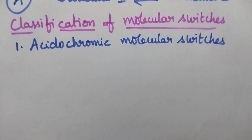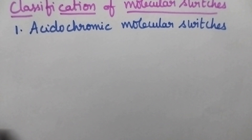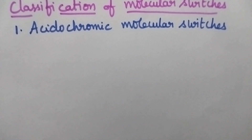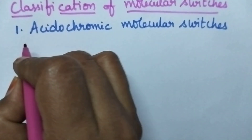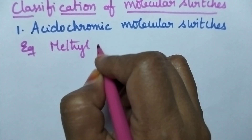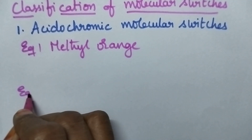Coming to the acidochromic molecular switches — that means the molecules which can change their structure in the presence of pH. In acidic conditions it will have one structure, and in basic conditions it may have another structure. Then those molecules can be called as acidochromic molecular switches. The best examples are methyl orange and phenolphthalein.